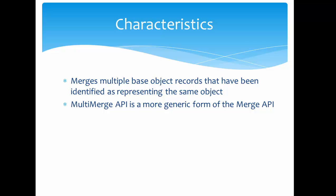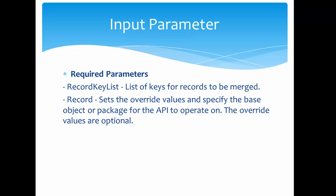The Multi Merge API uses two major parameters. First is the Record Key List, which is a required parameter where we pass the unique identifier of all records to be merged. The second is Record, which is an optional parameter — for example, if you want to override a particular column, you can pass that column in the request. The Record specifies override values and the base object or package name for the API.